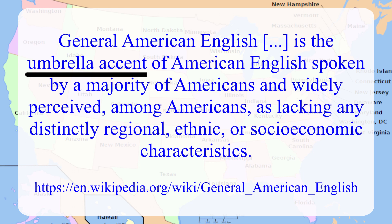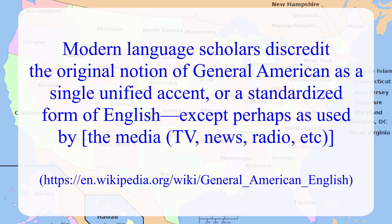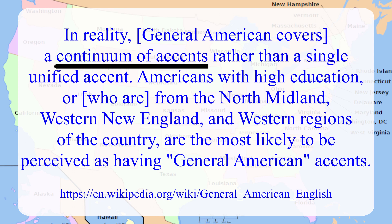Well, that's not very helpful. Let's dig a little deeper. According to Wikipedia, General American English is the umbrella accent of American English spoken by a majority of Americans and widely perceived among Americans as lacking any distinctly regional, ethnic, or socioeconomic characteristics. Modern language scholars discredit the original notion of General American as a single unified accent or a standardized form of English, except perhaps as used by the media, such as TV, the news, etc. In reality, General American covers a continuum of accents rather than a single unified accent.